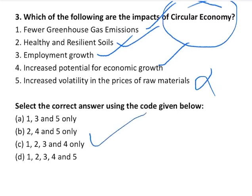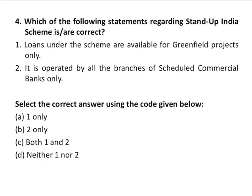Circular economy is an economic system aimed at eliminating waste and the continued use of resources. A circular system employs reuse, sharing, repair, remanufacturing, and recycling to create a closed-loop system. For the impacts of circular economy, refer to statements one through four from the question.